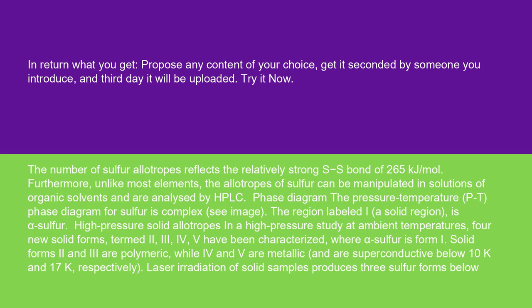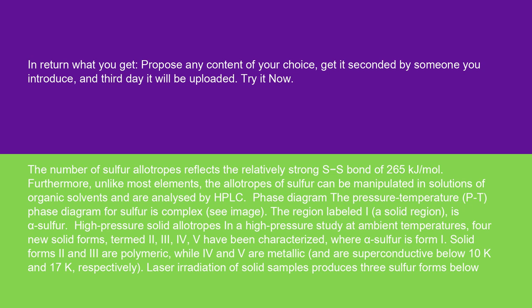Solid forms 2 and 3 are polymeric, while 4 and V are metallic, and are superconductive below 10 K and 17 K respectively. Laser irradiation of solid samples produces three sulfur forms below 200 to 300 bar (20 to 30 GPa).